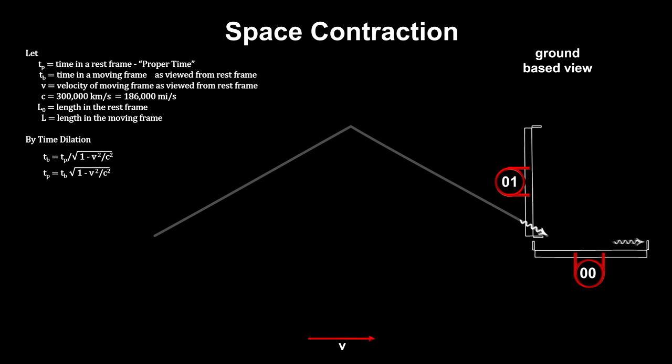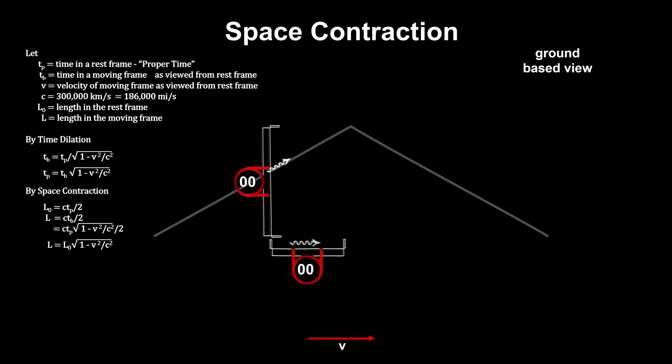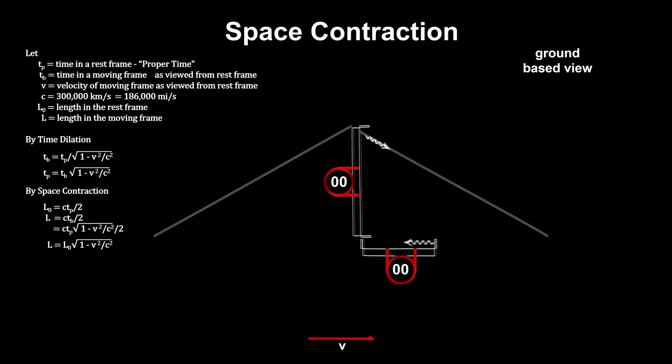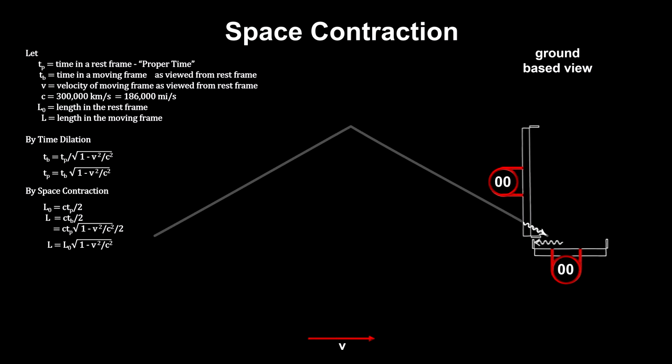Here we see the perpendicular clock ticking once before the light in the other clock has returned. The only way to bring the clocks back into sync is for the length of the distance traveled horizontally to shrink. This is called space contraction.